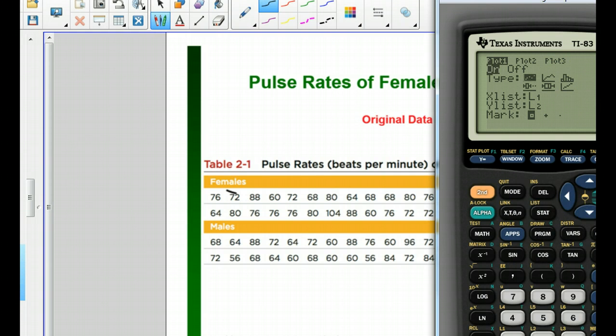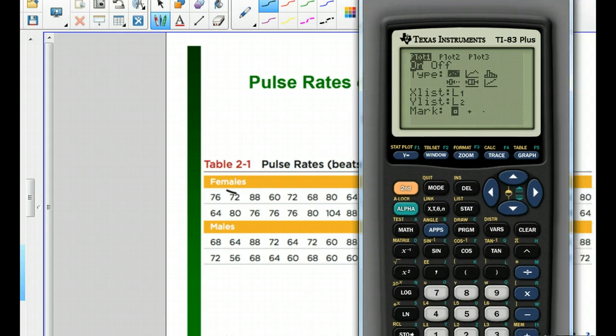And then here's histogram right here. So I'm going to press down and scroll, let me put this into the screen, scroll to the right until I get histogram, hit enter, and it turns that solid.